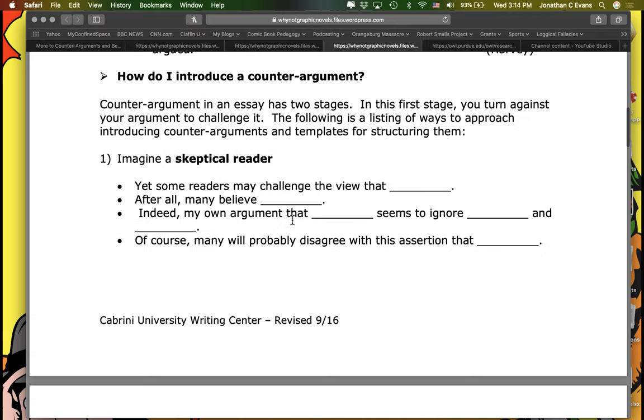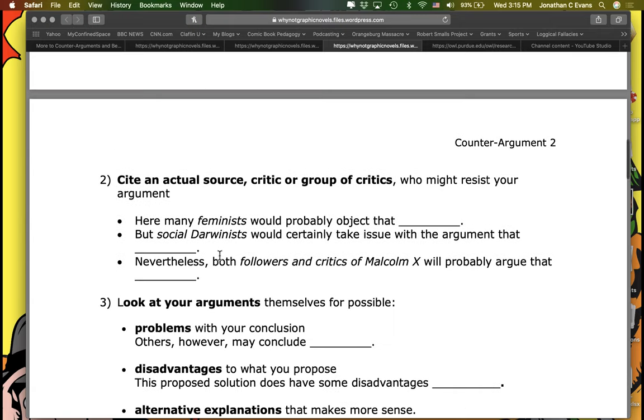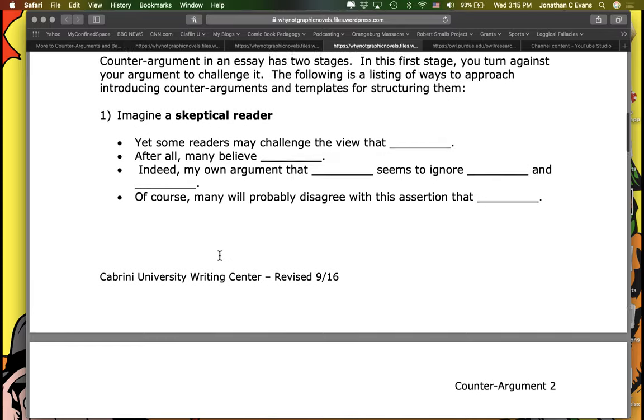Now, here's something. How do I introduce a counter argument? Counter argument in an essay has two stages. The first stage is to turn against your argument and challenge it. The following list of ways to approach introducing a counter argument templates. So here it is. Yet some readers may challenge. After all, many believe. Indeed. The key element here, and one of the things I'm going to be looking for when I look at your papers, is I'm going to be looking for that clear transition. Do I see the clear changeover from the argument to the counter argument section? If I don't see that, that's going to be something I'm going to point to you and say, hey, we might want to clear that up.